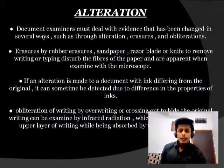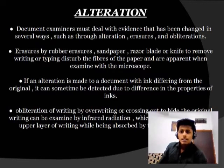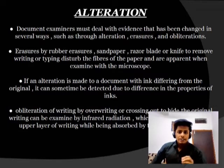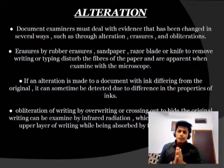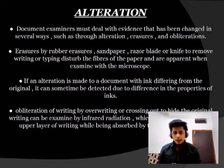Now let's talk about what is an alteration. A document examiner must deal with evidence that has been changed in several ways, such as through addition, erasure, and obliteration. An alteration is a change that has been made to a document — you can add something, erase it, or obliterate it.